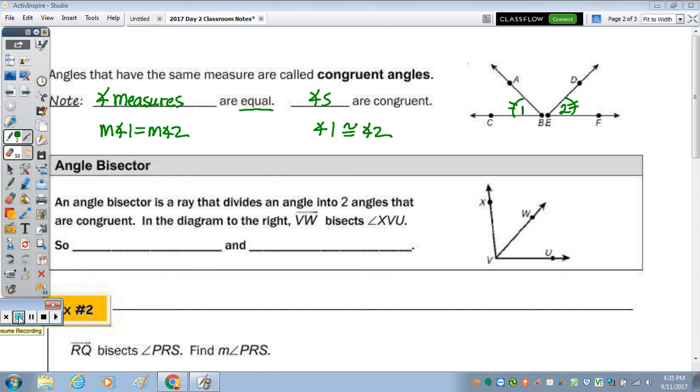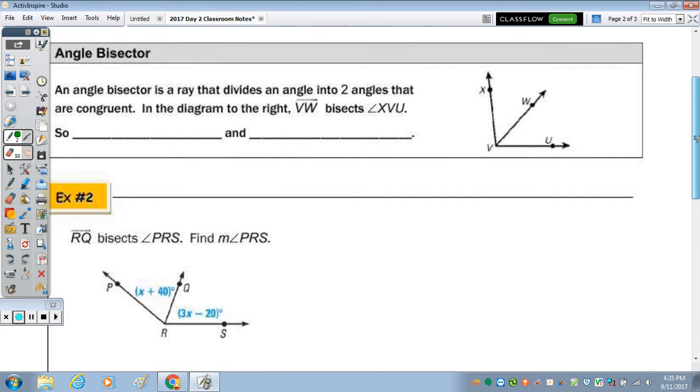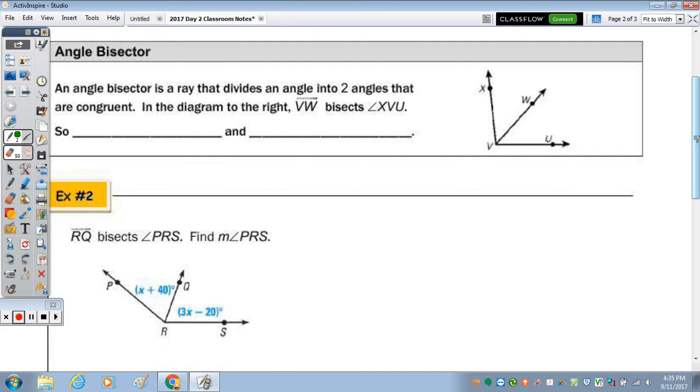The angle bisector. So last class we talked about a segment bisector, and a segment bisector intersects a segment at its midpoint. And the midpoint divides the segment into two congruent segments. An angle bisector is a ray that divides an angle into two angles that are congruent. So in the diagram to the right, ray VW, this ray right here, bisects angle XVU. So that means, I'm going to put numbers in there, so I don't have to write the angles in terms of the three letters. That angle 1 would be congruent to angle 2. And their measures are equal.